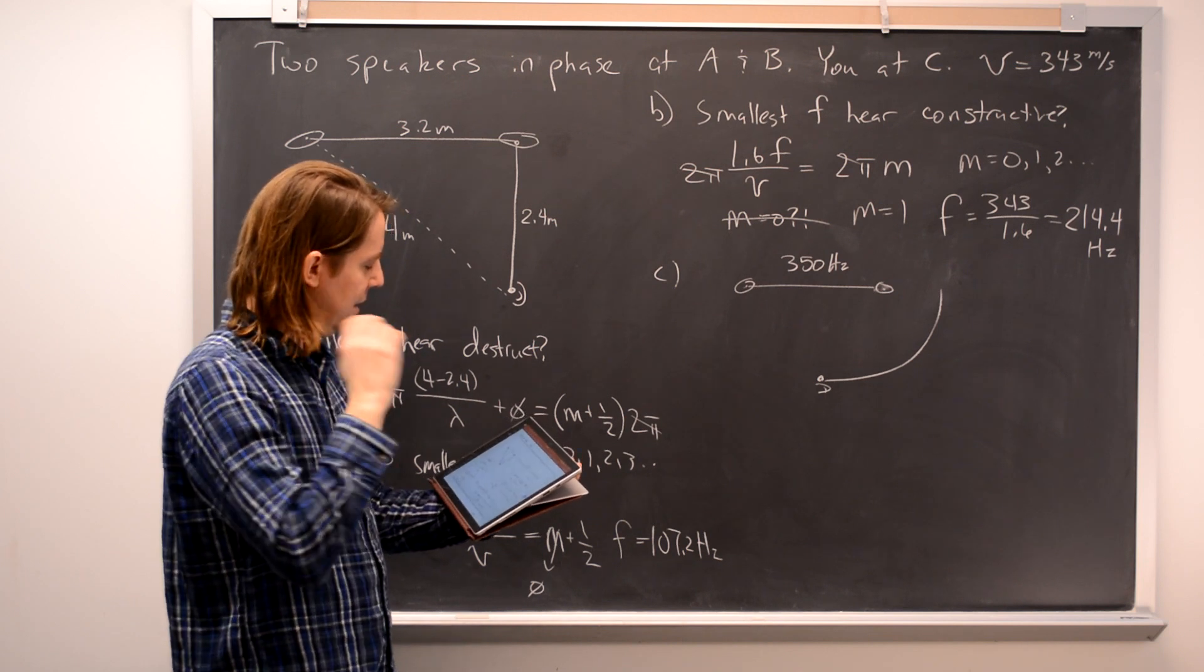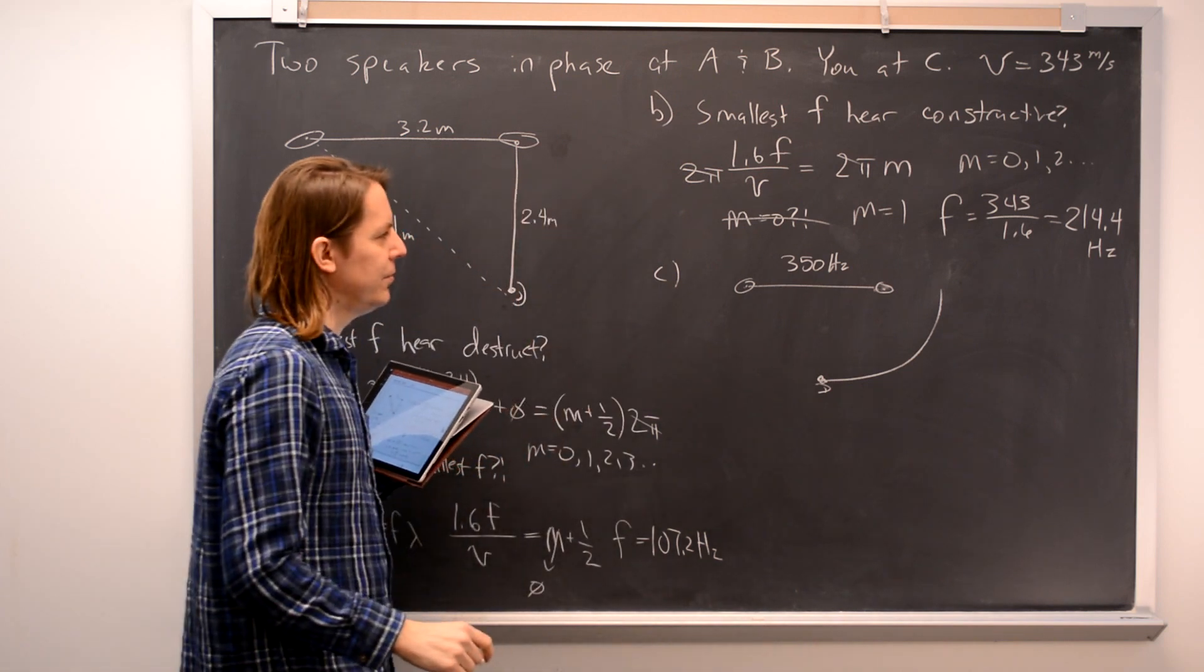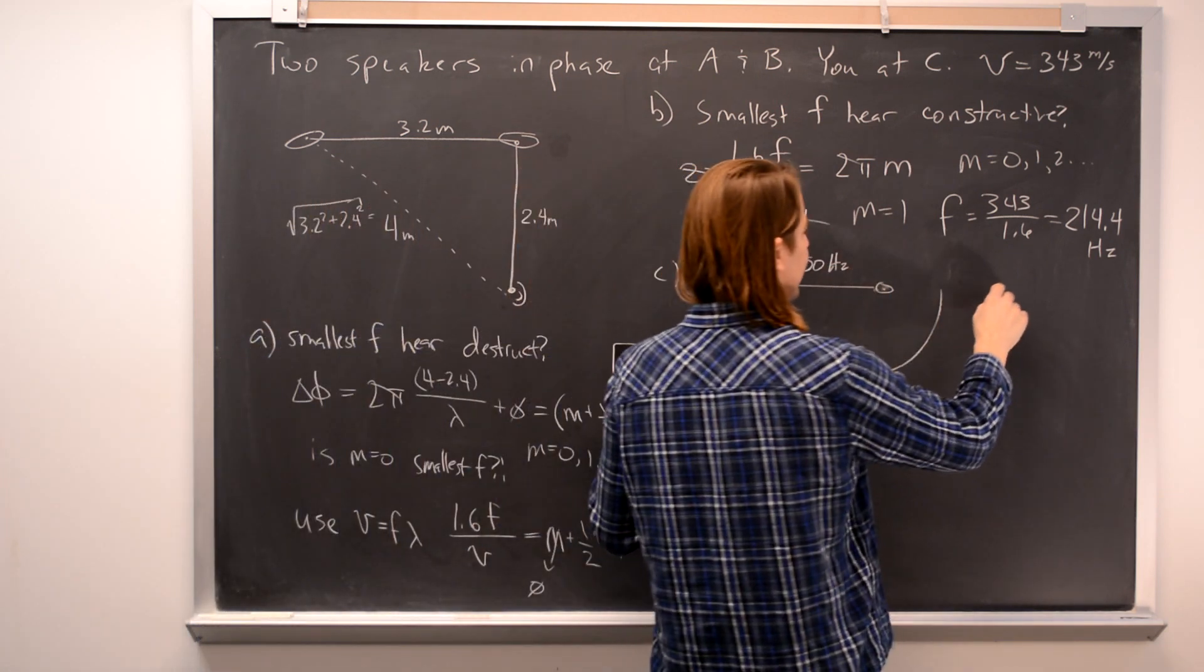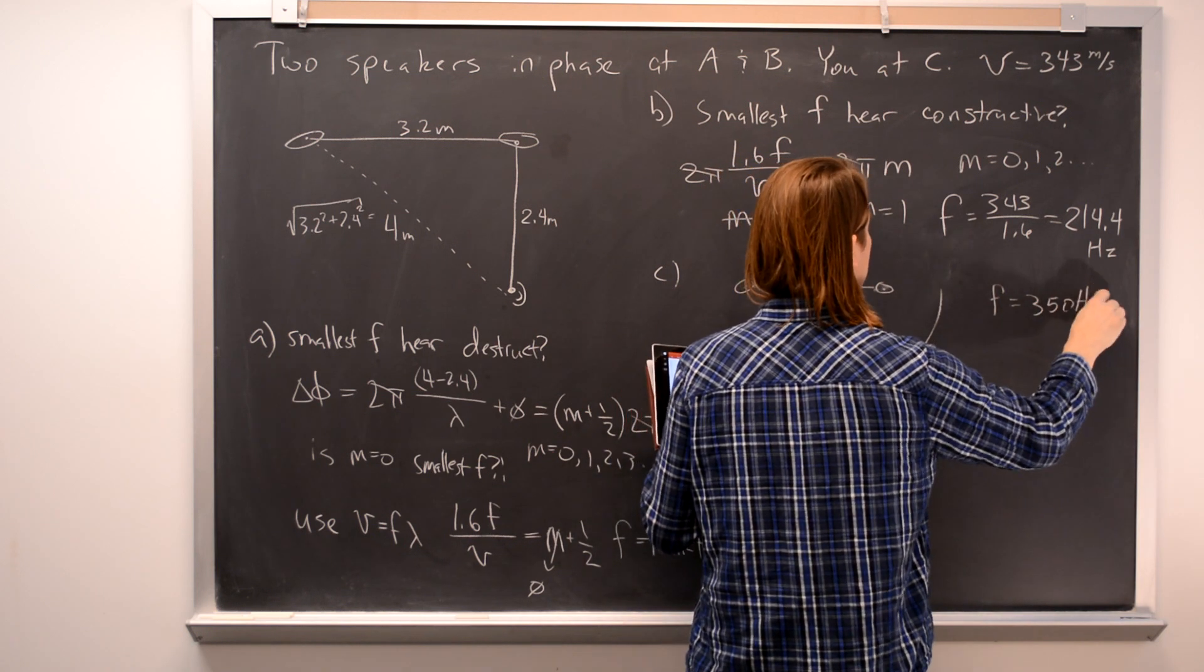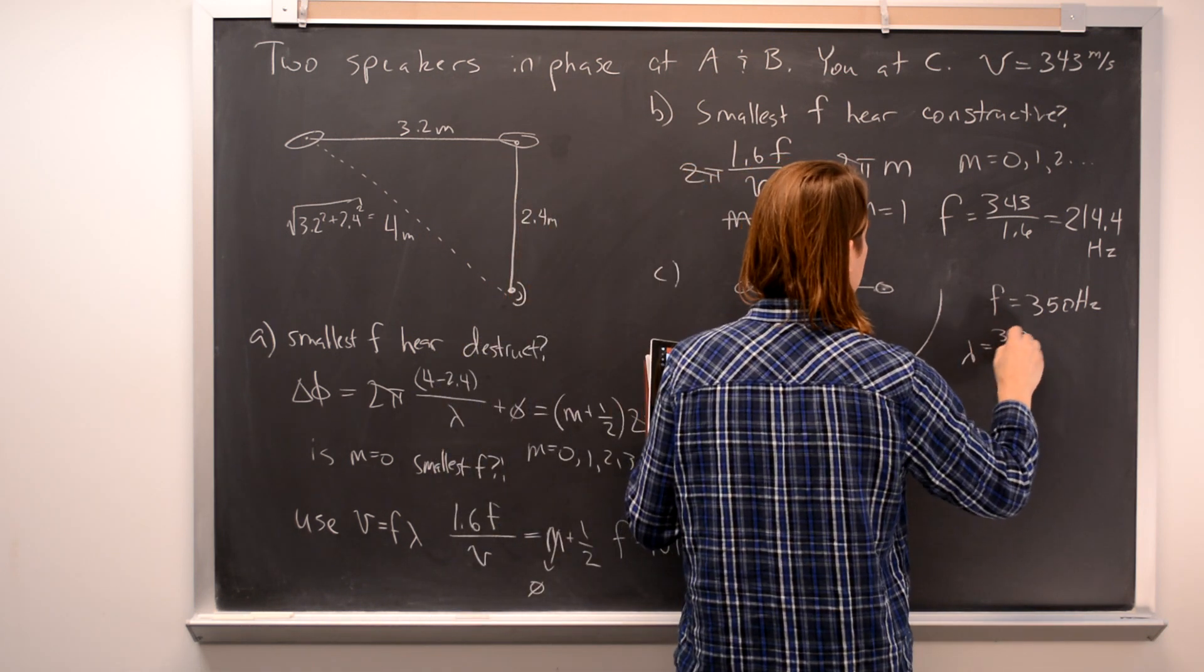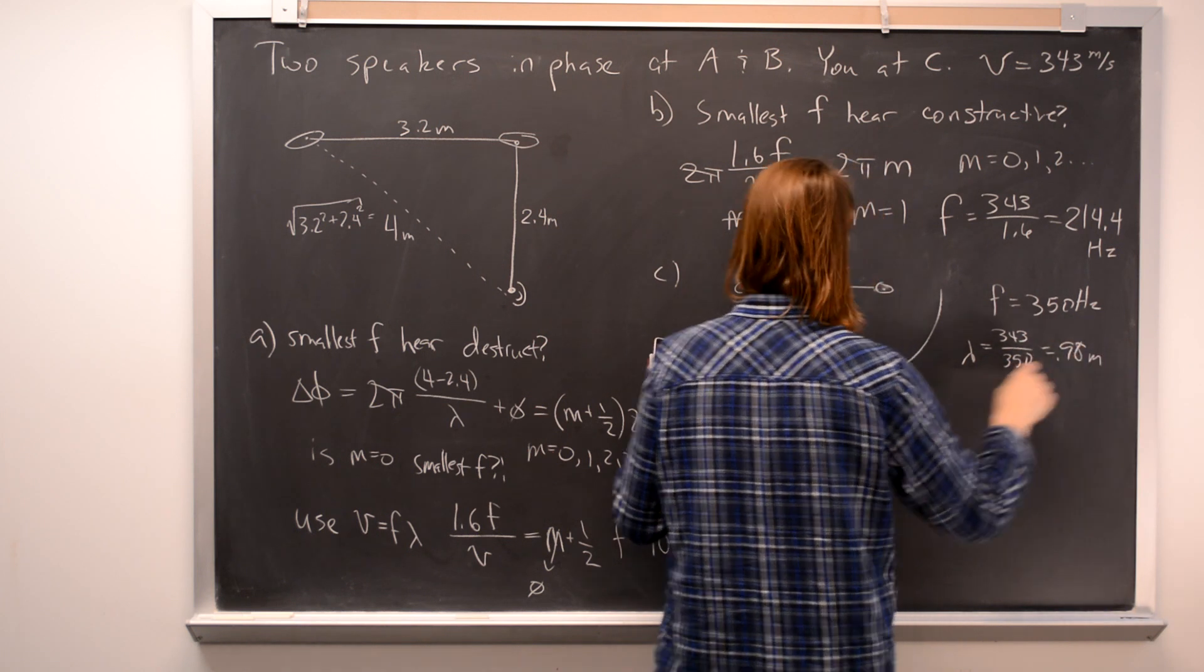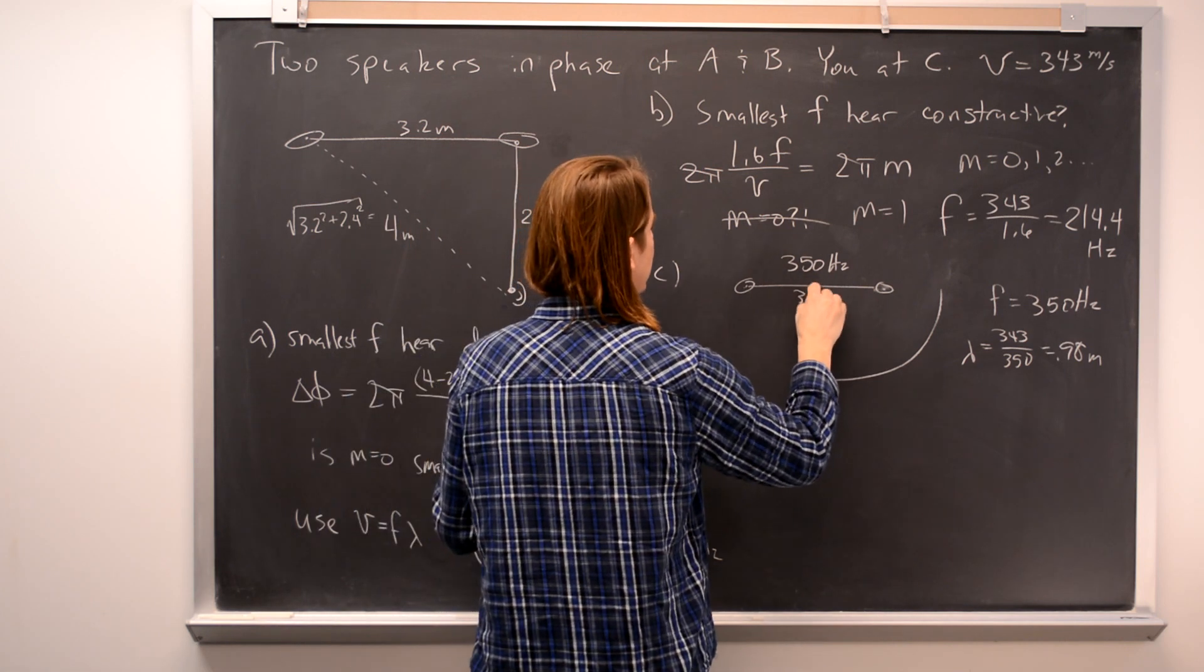But what you've got to think about is what we're really looking for is when do we have constructive interference. So let's just set up some numbers here. First, we know that F is 350 hertz. We know that the wavelength is going to be 343 over 350 is 0.98 meters. And we know the separation is the same as it was before, 3.2 meters.